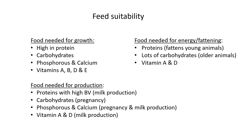For growth, it should also have phosphorus, calcium, and vitamins A, B, D, and E — especially for young animals. Food needed for production must have high protein with a high biological value (BV), which is good for milk production. Carbohydrates are good for pregnancy, which also falls under production. Phosphorus and calcium are good for both pregnancy and milk production, and vitamins A and D are also good for milk production.